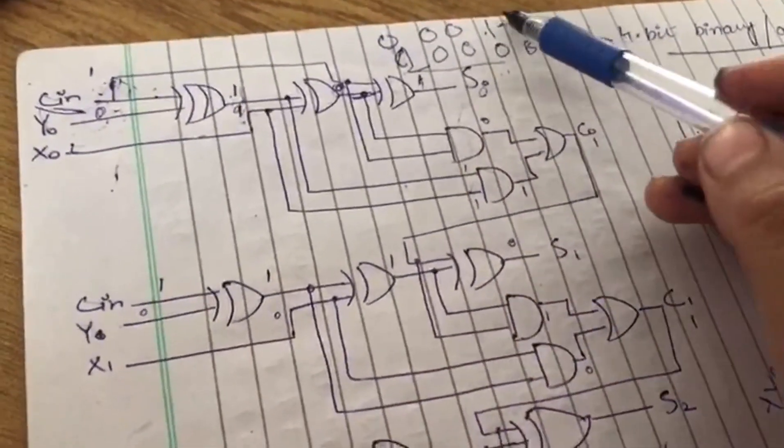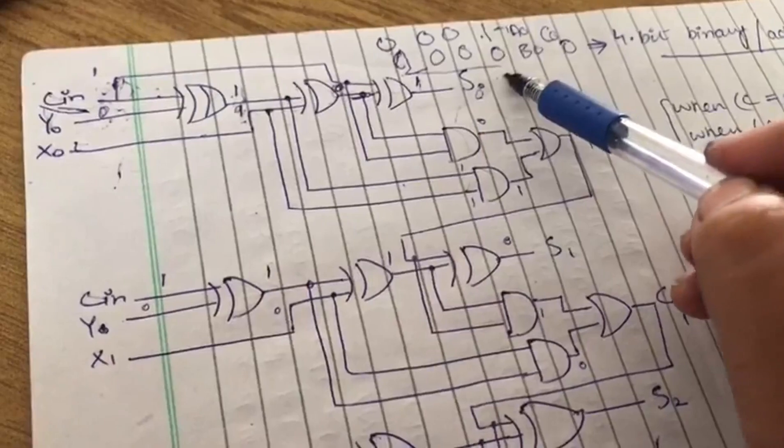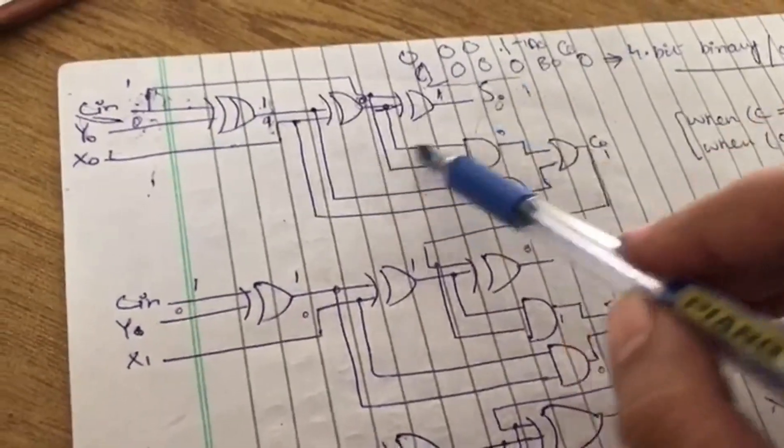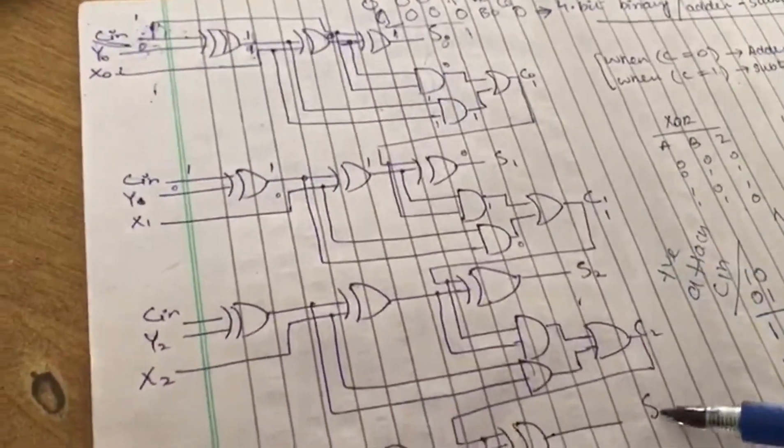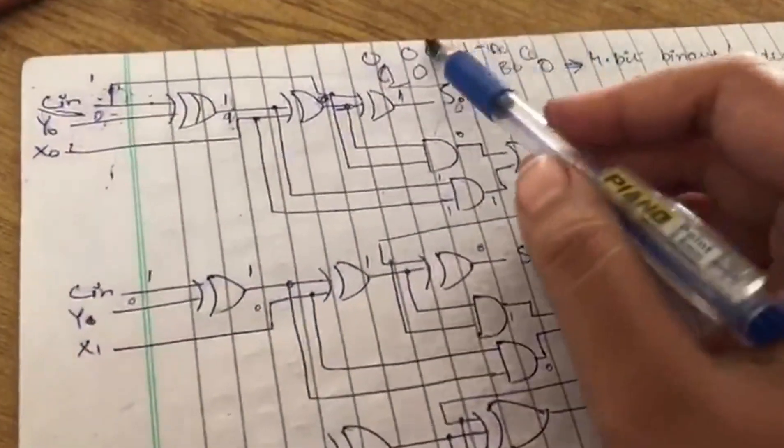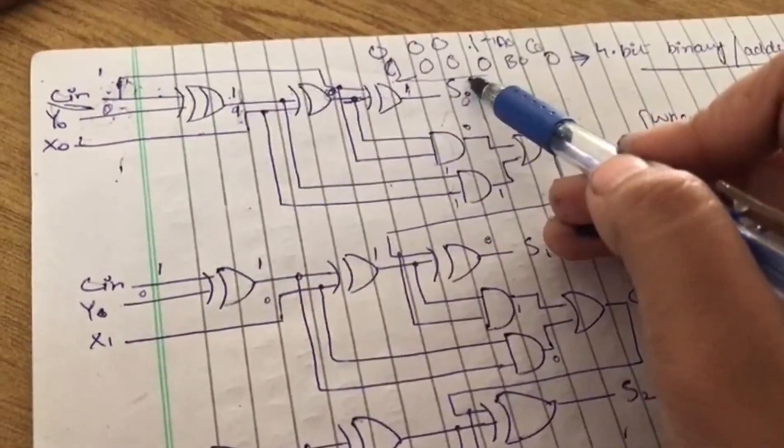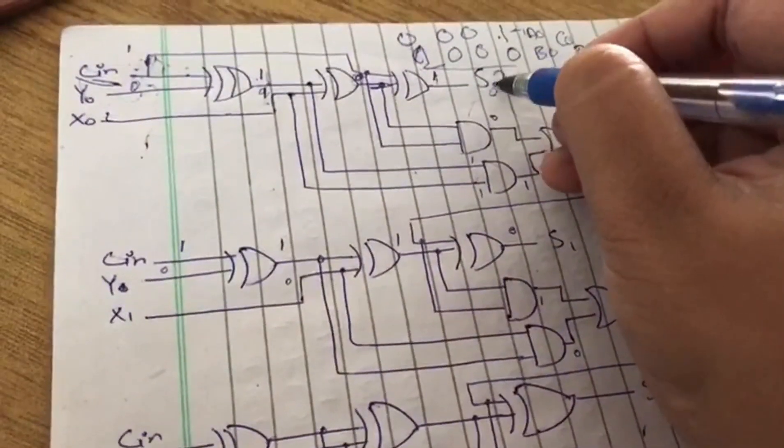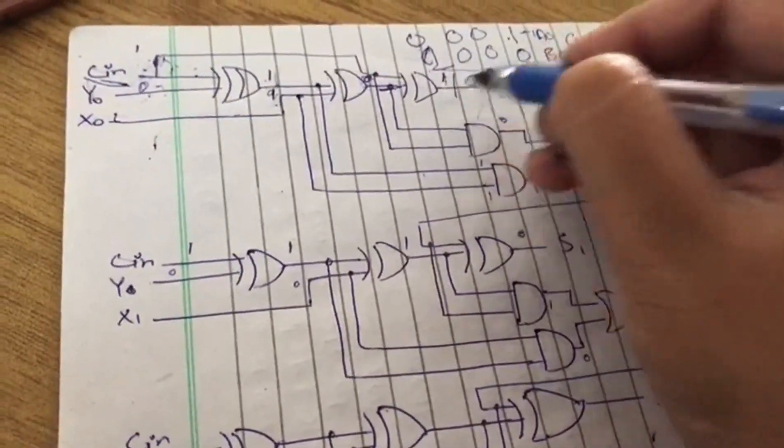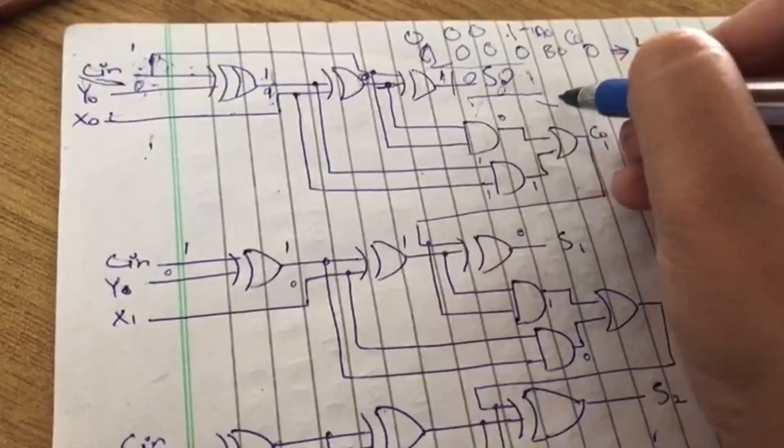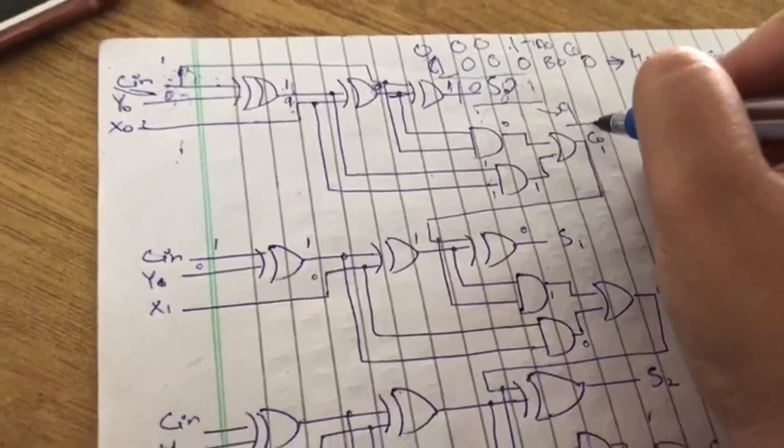If we sum according to the circuit, 1 plus 0 gives 1. The result will be 0001 in binary. This demonstrates how our circuit performs the addition operation.